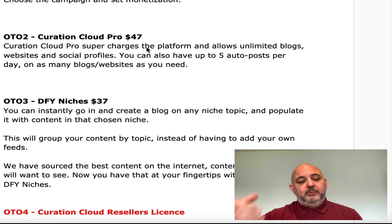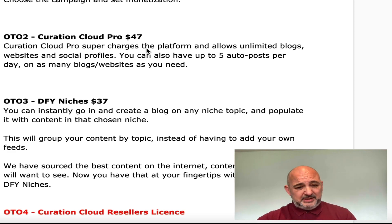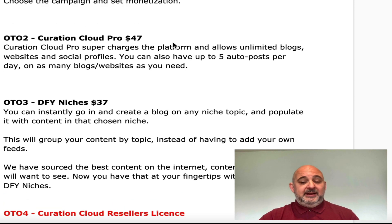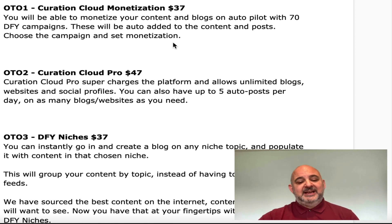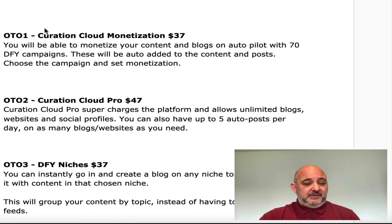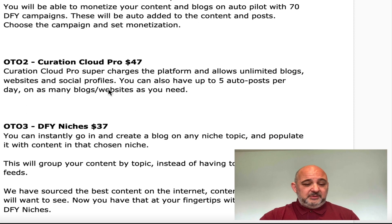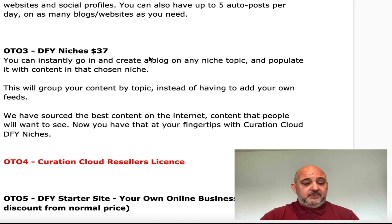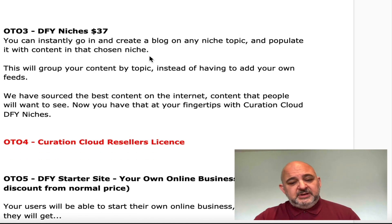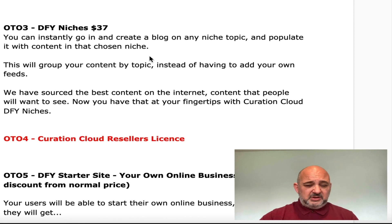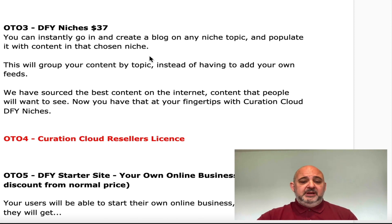The first upsell I would definitely suggest getting is Creation Cloud Pro. This allows you to add unlimited blogs, websites, and social profiles, and have five auto-posts per day on as many blogs and websites as you need. That's $47 — definitely worth buying. The next one is the done-for-you niches at $37. This has a ton of RSS feeds already sourced, so you just choose your niche and it populates your blogs and content with that chosen niche. Definitely one worth buying.